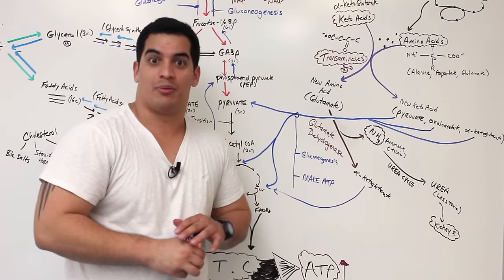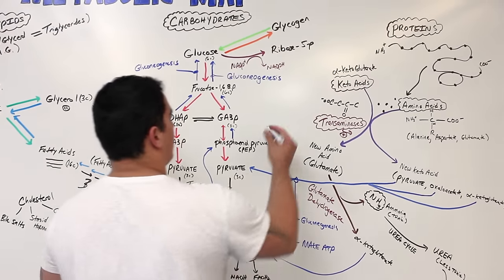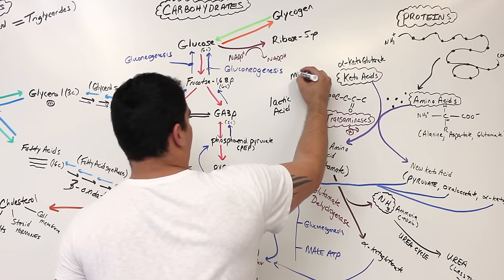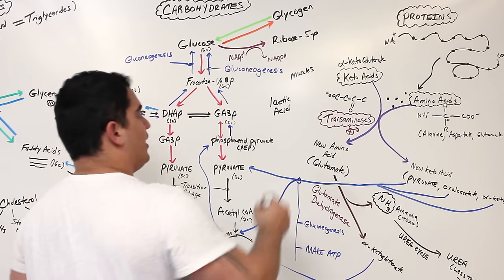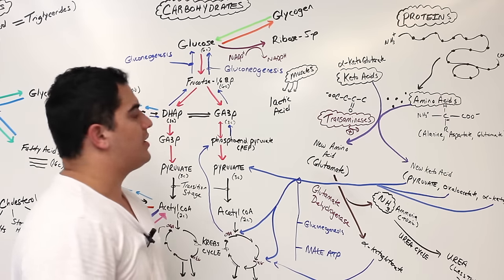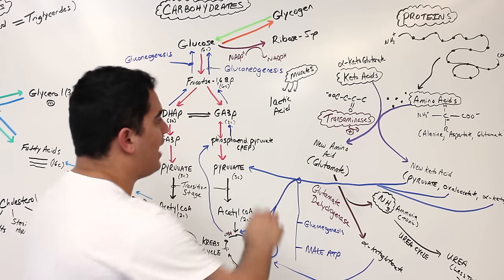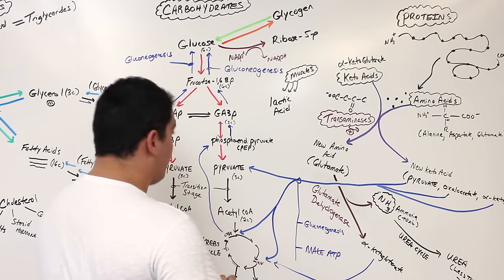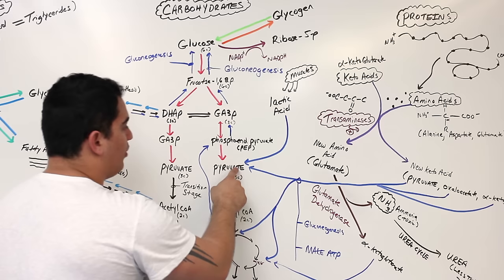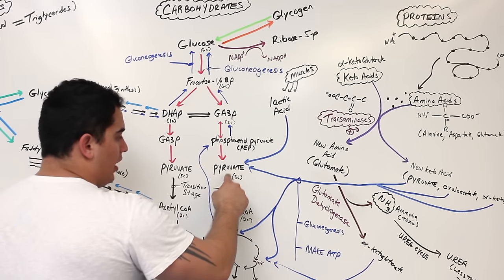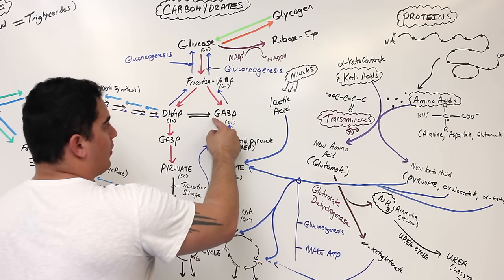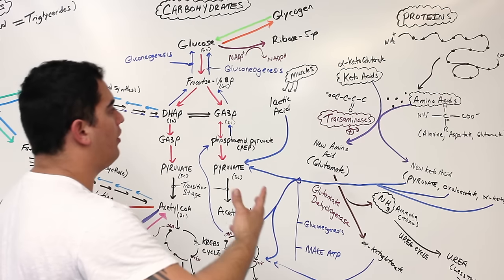There's one more mechanism for gluconeogenesis. There's a molecule called lactic acid — we can get lactic acid from skeletal muscles. What's really interesting is that this lactic acid can be taken up by the liver, and that lactic acid can be converted into pyruvate. Pyruvate can either go down to be used for ATP, or it can go down to acetyl-CoA, through this whole process to make OAA, back up to phosphoenolpyruvate, then up to GA3P, fructose-1,6-phosphate, and then up to glucose. What is that called? Gluconeogenesis.